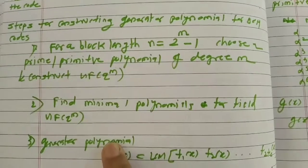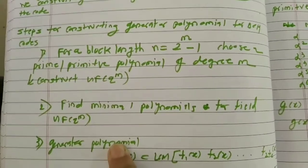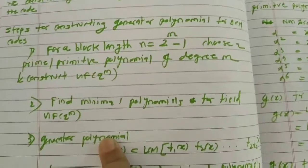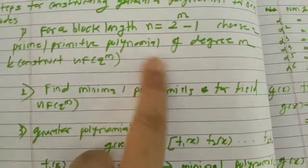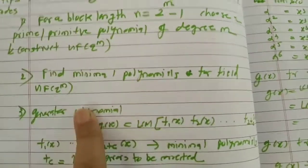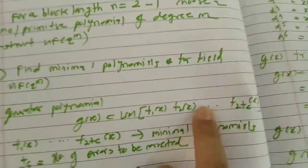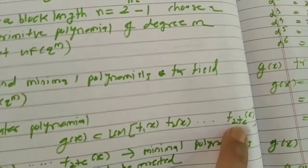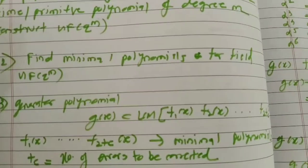One important thing: to solve the BCH chapter you should know all the concepts in cyclic codes — the Galois field, its extension field, primitive elements, primitive polynomials, minimal polynomials, and all those things. After finding the elements of GF(q^m), you have to find the minimal polynomials for that field. The generator polynomial is the LCM of minimal polynomials — you take the multiplication of minimal polynomials f1 up to f_{2·TC}, where TC is the number of errors to be corrected.